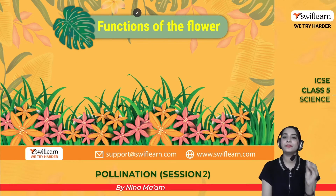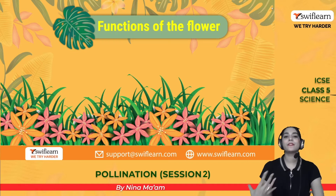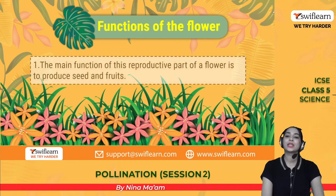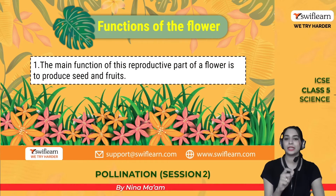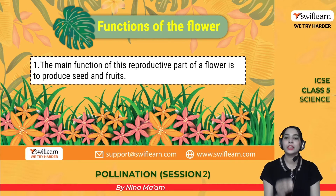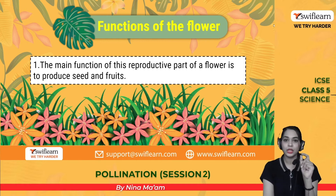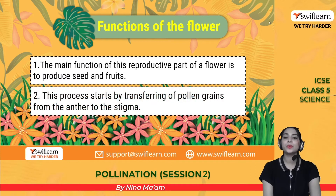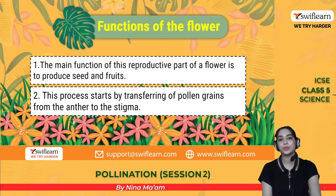What are the functions of the flower? The main function of the flower is reproduction — it produces seeds and fruits. The flower has ovary and ovule. The ovary will turn into fruit and the ovule will develop into seeds. This process starts with the transfer of pollen grains from anther to stigma.